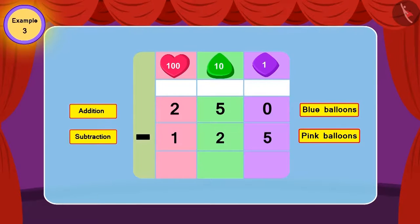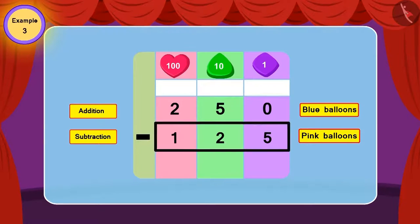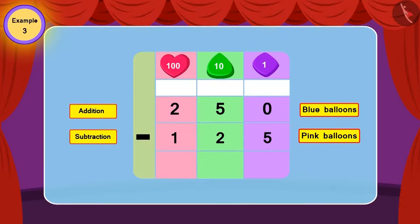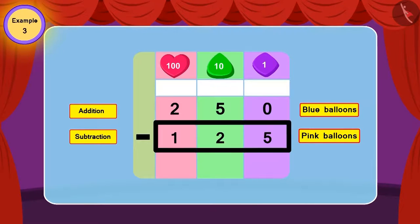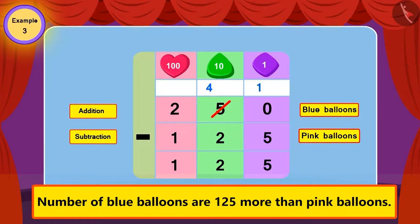Because the number of blue balloons is more than pink balloons. For this, from 250, 125 is to be subtracted. And now, we can see that the number of blue balloons are more than pink balloons by 125.